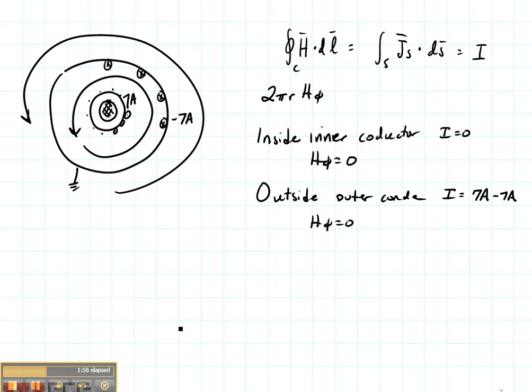The only place that I'm going to have any current at all is in between the two conductors. That's this case right here. And in that case, it's going to be exactly the same as the problem I just did. 2 Pi R H Phi is going to be 7 amps. So H Phi is going to be 7 amps divided by 2 Pi R.